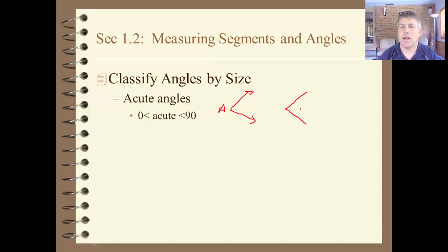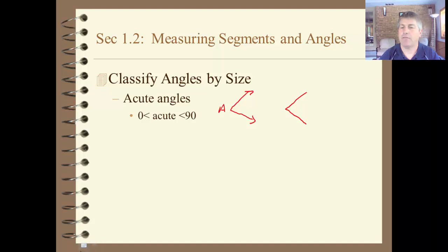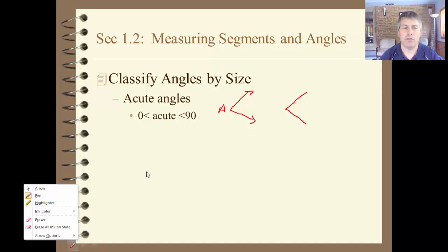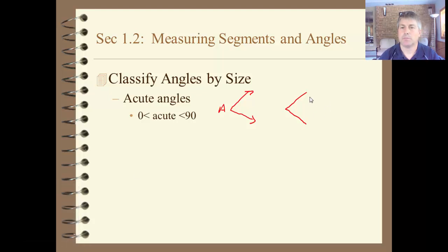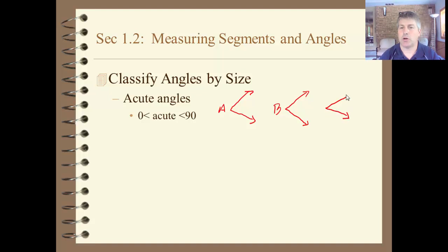We can't always trust the look of the diagram — you'll have to go by the measure. Any angle that is less than 90 degrees and more than 0 is going to be an acute angle. Something a little bit sharper like that is going to be acute.